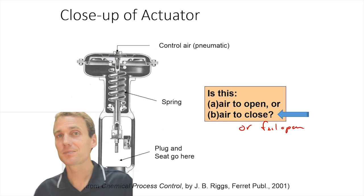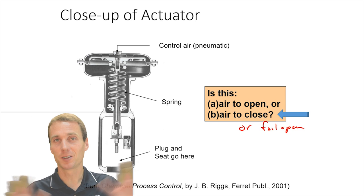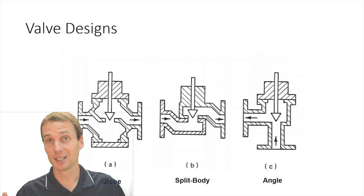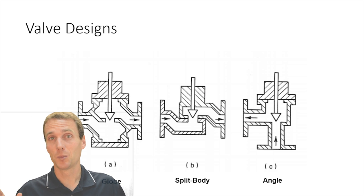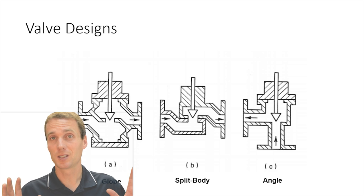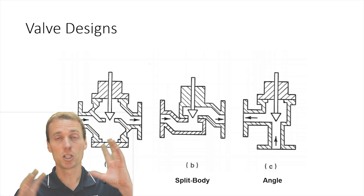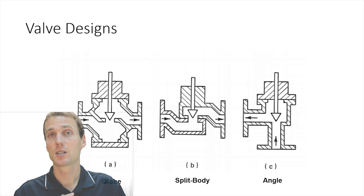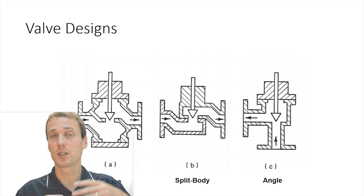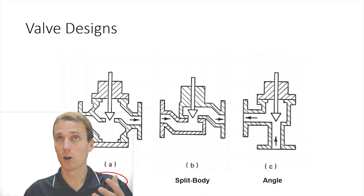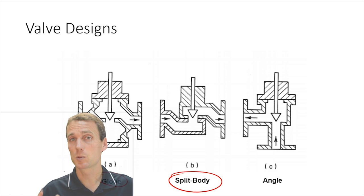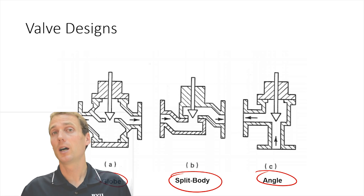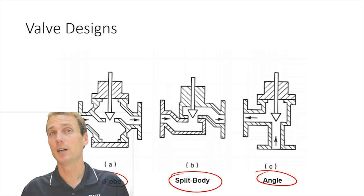Let's go to a couple of different valve designs. One of the things that we can choose is the geometry within the valve, and that influences some of the losses. Here we have a globe; you might have a split body or an angle type valve.